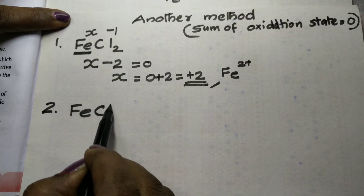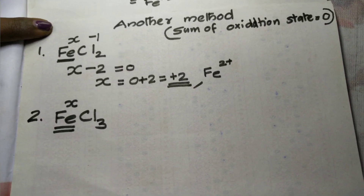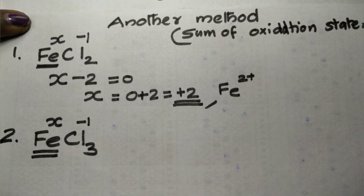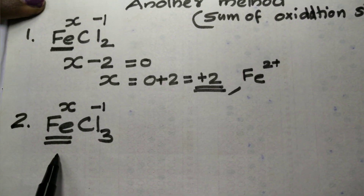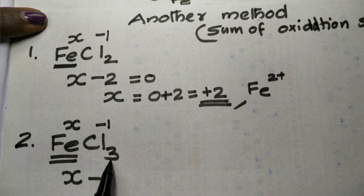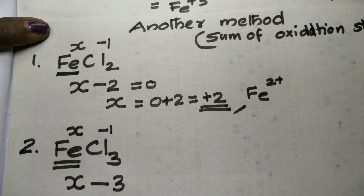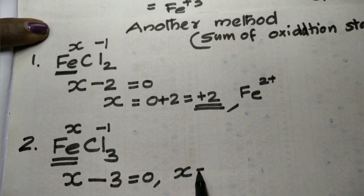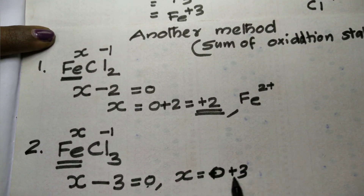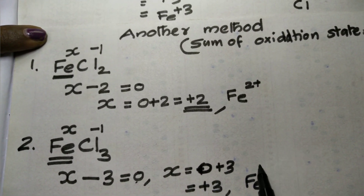For FeCl₃, we apply the sum method. Chlorine has oxidation state minus 1. Setting x plus 3 times minus 1 equal to zero gives x equal to plus 3. The symbol is Fe³⁺.